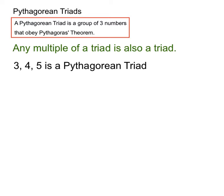3, 4, 5, as we've just seen, is a Pythagorean triad. Now, if we multiplied every one of those by 2, we would get 6, 8, and 10. And 6 squared plus 8 squared equals 10 squared, so that's itself a Pythagorean triad.